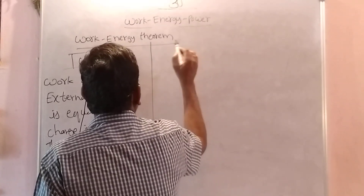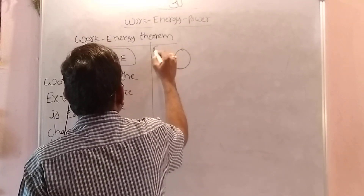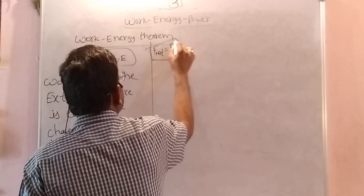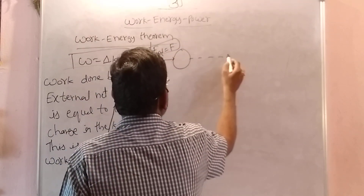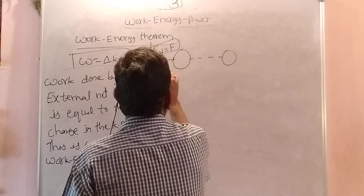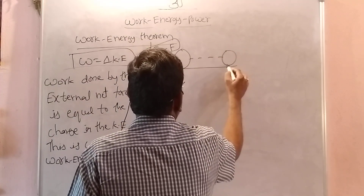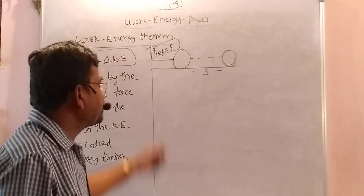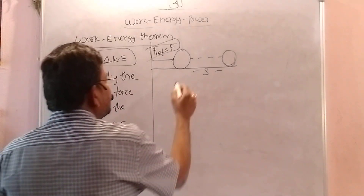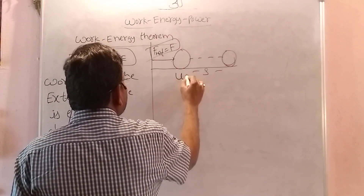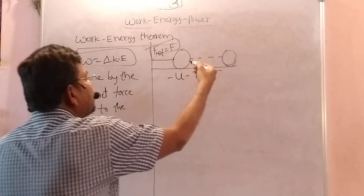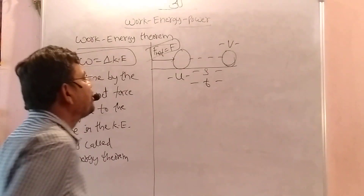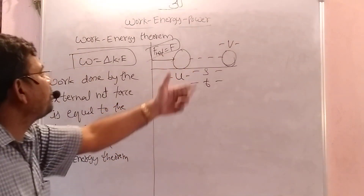Here I am taking one body. On this body, some external net force is exerted. Due to this, it undergoes some displacement S. Initially it is moving with velocity u. After time t, it attains a velocity of v. So in this case, how much work is done?